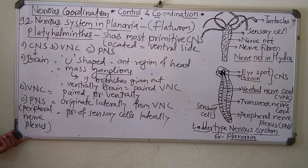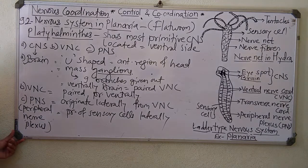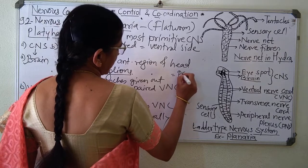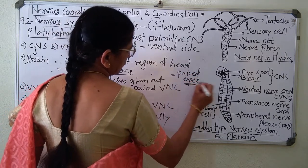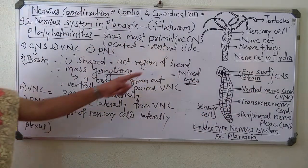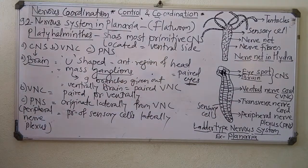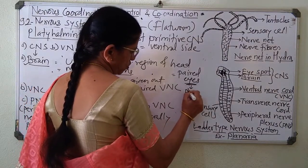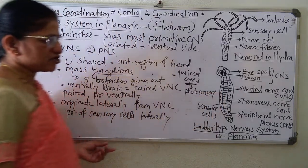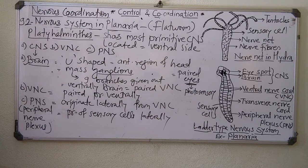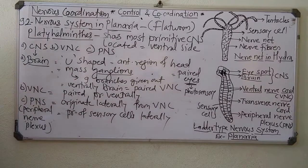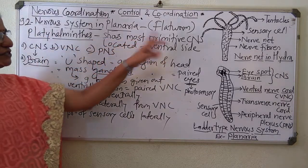A pair of eyes — photosensory — are present or located on the dorsal side of the brain. A pair of eyes is present on the brain; these are photosensory in nature, meaning they can form an image. The sensory cells are scattered throughout the ventral nerve cord as well as peripheral nerve plexuses, and in that way, in Planaria the most primitive CNS is present.